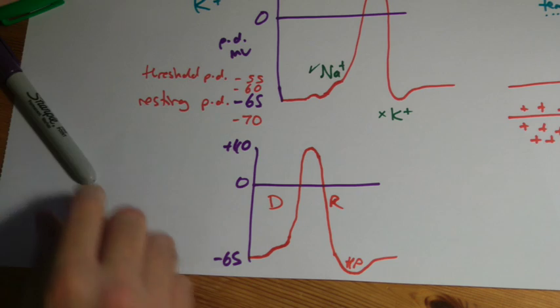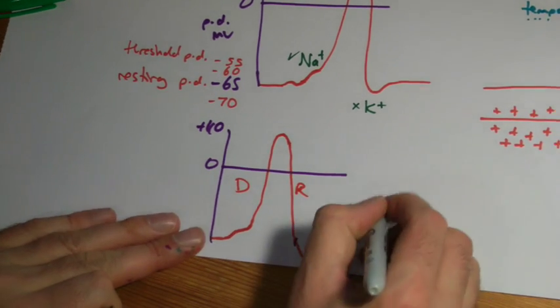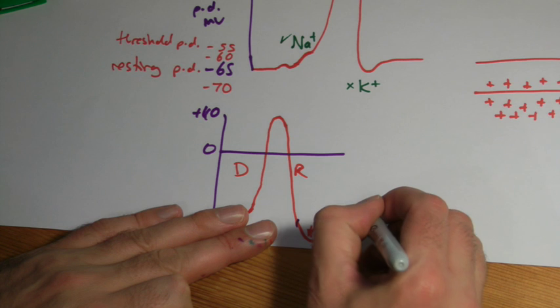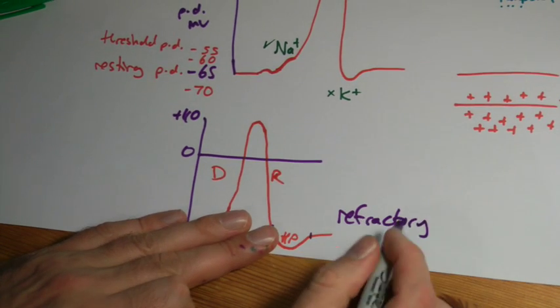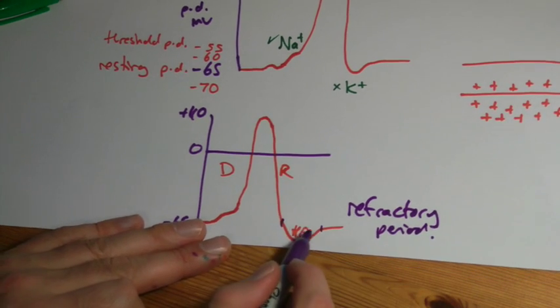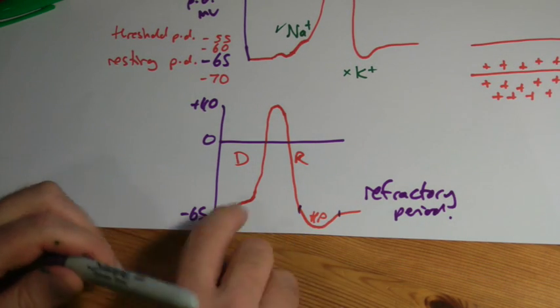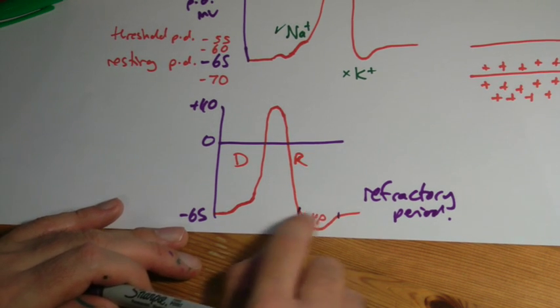And this bit here is sometimes also referred to, it comes to this when we do propagation, as the refractory period. And this is a period when you can't stimulate the cell. It doesn't matter if any more generator potentials come. While it's down here, gone below that resting potential, you cannot stimulate the nerve.